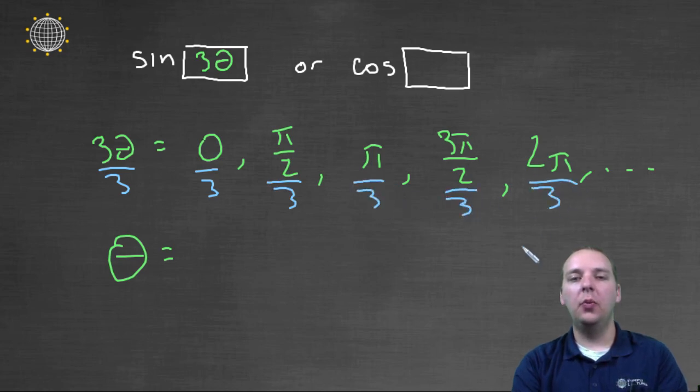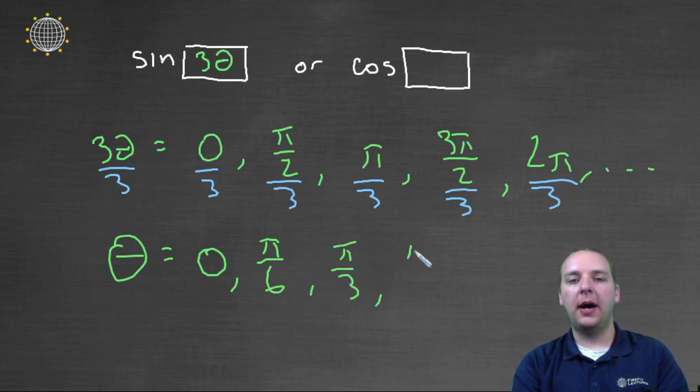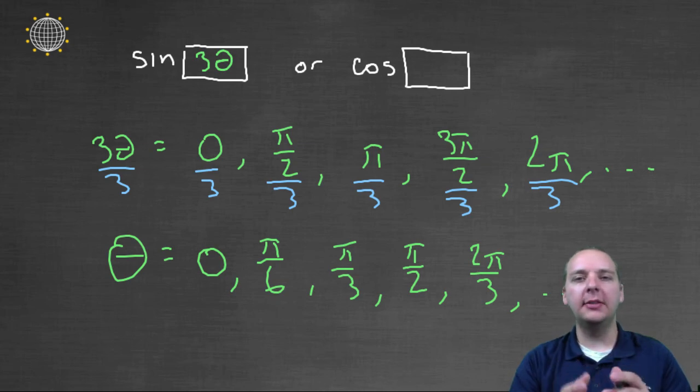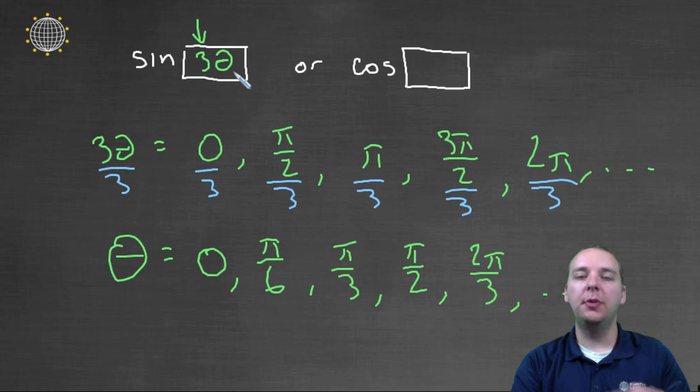And we would get what as a result? We would get zero. This would be pi over six, pi over three, pi over two, two pi over three, et cetera. So it looks like we're choosing weird thetas, but don't forget, we're having to triple those angles before we take sine and cosine of it. And so watch this. As you triple these angles, what's three times zero? Well, it's zero.